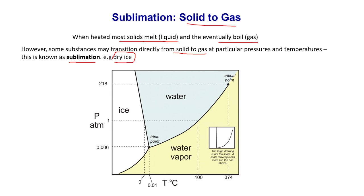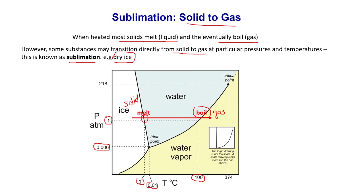Let's look at a phase diagram using water as an example. At one atmosphere pressure, water is solid at 0°C; as you heat it, it melts to liquid, and at 100°C it boils into a gas. But if you lower the pressure to about 0.006 atmospheres, the temperature only needs to be about 0.01°C, and the ice transitions directly from solid to gas — that is sublimation. By manipulating atmospheric pressure and temperature, we achieve this direct solid-to-gas transition.